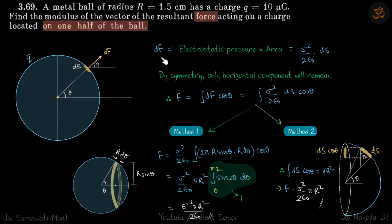We are going to use the concept of electrostatic pressure, which we covered in example 3.68. The electrostatic pressure on a conducting surface is given as σ²/2ε. So if you multiply that pressure by the area of a small element, you get the small force df on that element. That gives us df = (σ²/2ε) · dS.